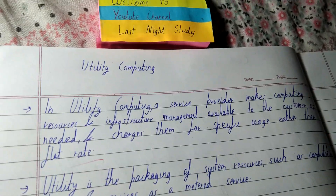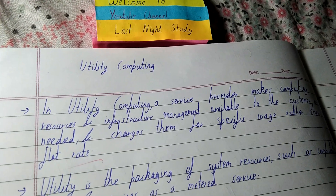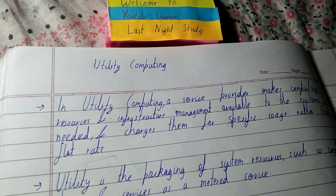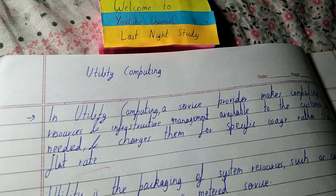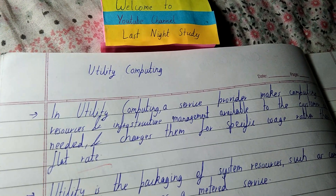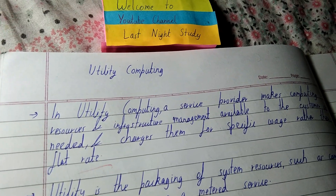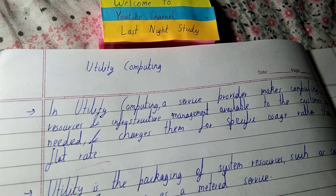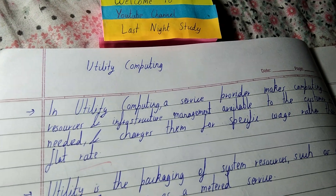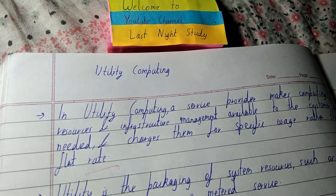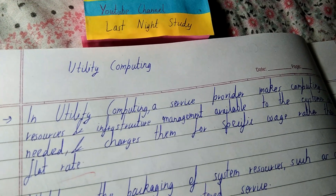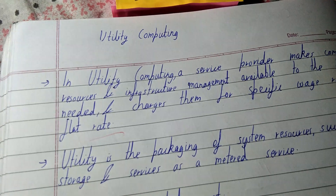One more example: when you use internet on your mobile, sometimes you buy monthly plans. But it's possible you won't use all the data allotted to you. If you're in a hurry and just need to search something — like a particular college name — it will only take a few KBs of data. You won't go to a recharge shop just for one Google search. You'll just switch on your mobile data, search it, and only that amount will be deducted from your balance. Utility computing works the same way.